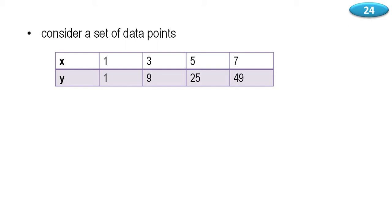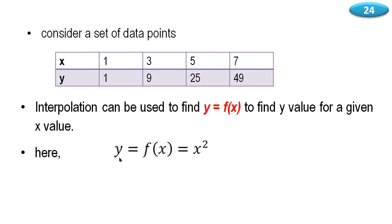Interpolation: consider a set of data points (x, y): (1,1), (3,9), (5,25), (7,49). That means if x1=1 then y1=1, if x2=3 then y2=9, x3=5 then y3=25, and x4=7 then y4=49. Here we can see that each y value is the square of the x value, so we can write the function y = f(x) = x².